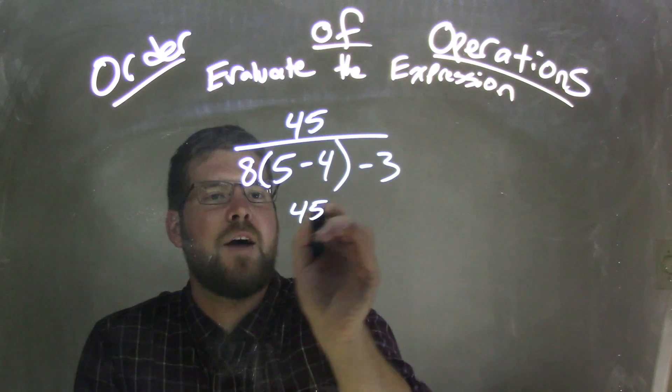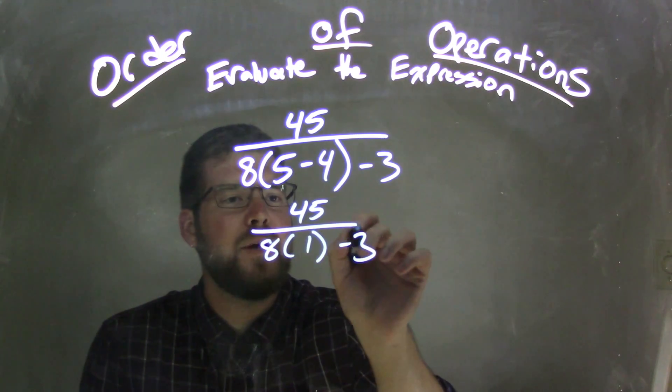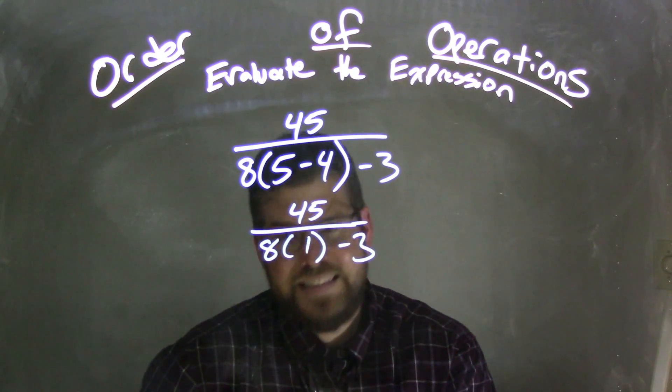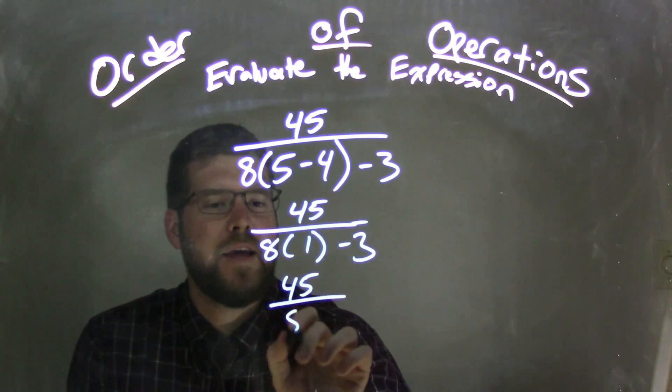So bring down the 45. I'm rewriting everything: 8 times 1 minus 3. Well, 8 times 1 is just 8, so we have 45 over 8 minus 3.